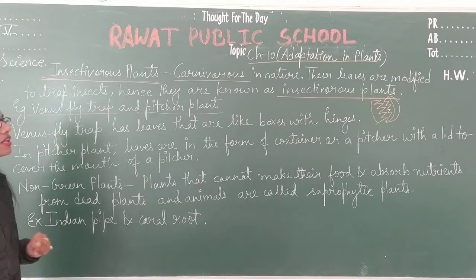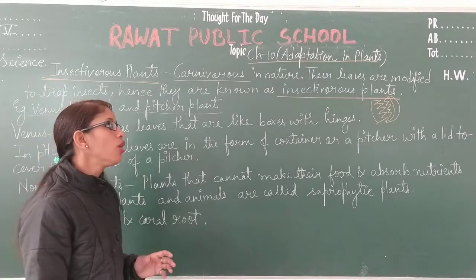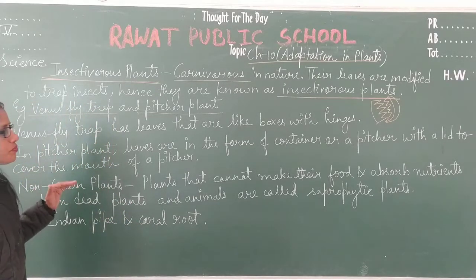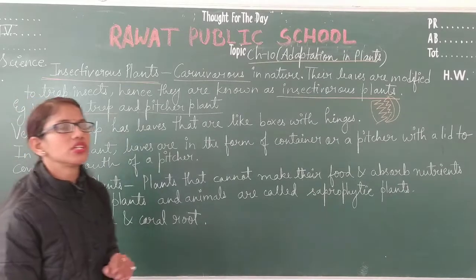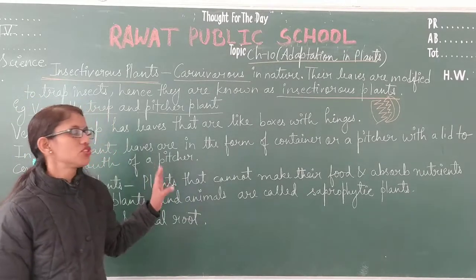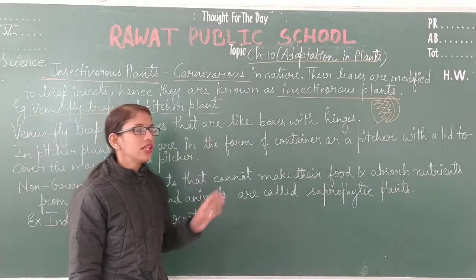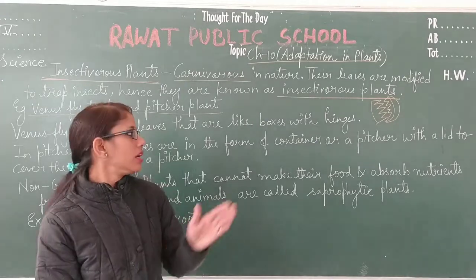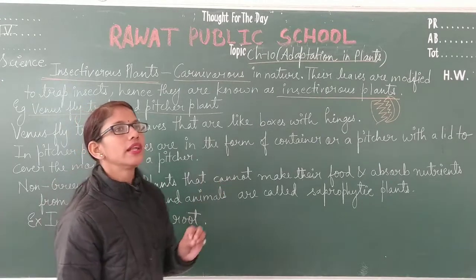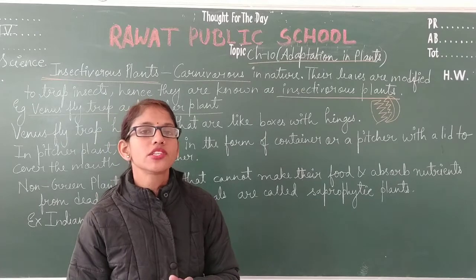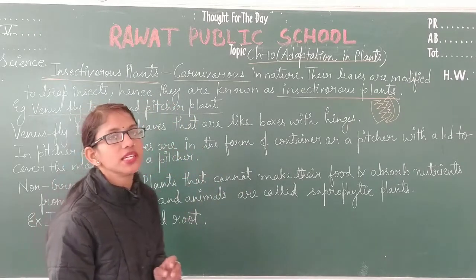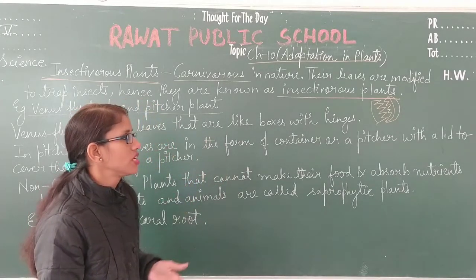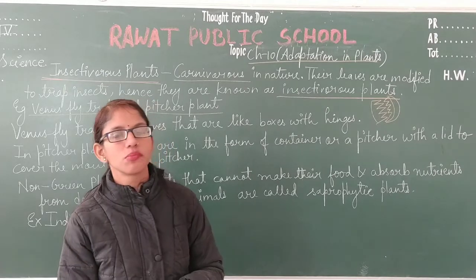The second example is the pitcher plant. The leaves are in the form of a container or pitcher, and there is a lid to cover the mouth of the pitcher. When an insect sits on the pitcher, the lid closes down and the insect falls inside. Some digestive juices are also present inside the pitcher that help in digestion of the insects.